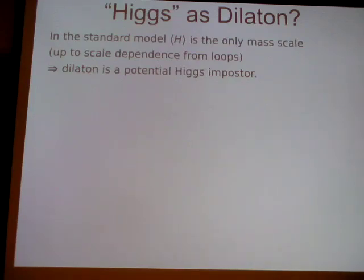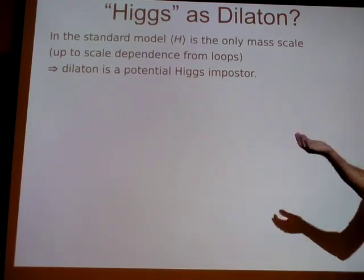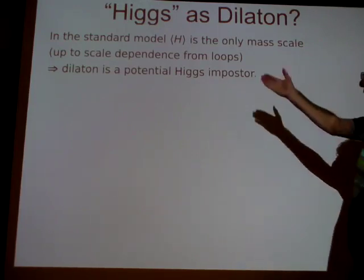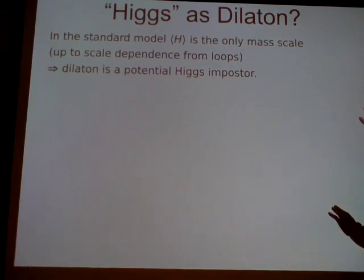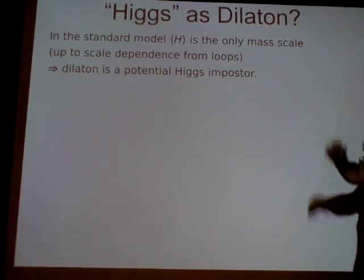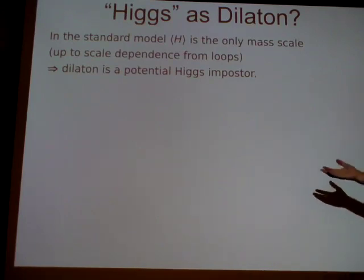The reason this is not a silly idea is that if you look at the standard model, the VEV of the Higgs is pretty much the only mass scale there is in the theory. It is the only mass scale in the Lagrangian — you can trade it for the mass of the Higgs itself, and there's some additional scale dependence from loops, but that's smaller. So the VEV of H is already a lot like a dilaton. A dilaton is something that spontaneously breaks scale invariance; the VEV of H breaks scale invariance, so the Higgs is actually not so far from being a dilaton in the standard model.